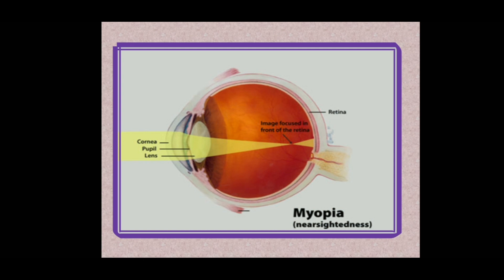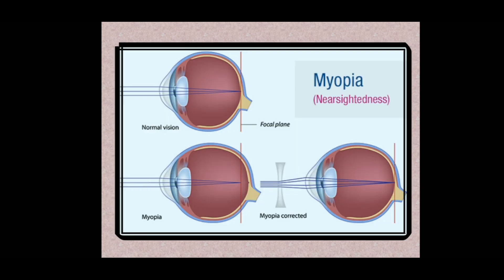In this picture showing myopia or near-sightedness, you can see the image is formed in front of the retina, making it unable to see distant objects clearly. In normal vision the image is focused on the retina itself. In myopia it is in front of the retina due to an elongated eyeball, and the curvature of the cornea is also slightly different — more bulged outward. It can be rectified using a concave lens.